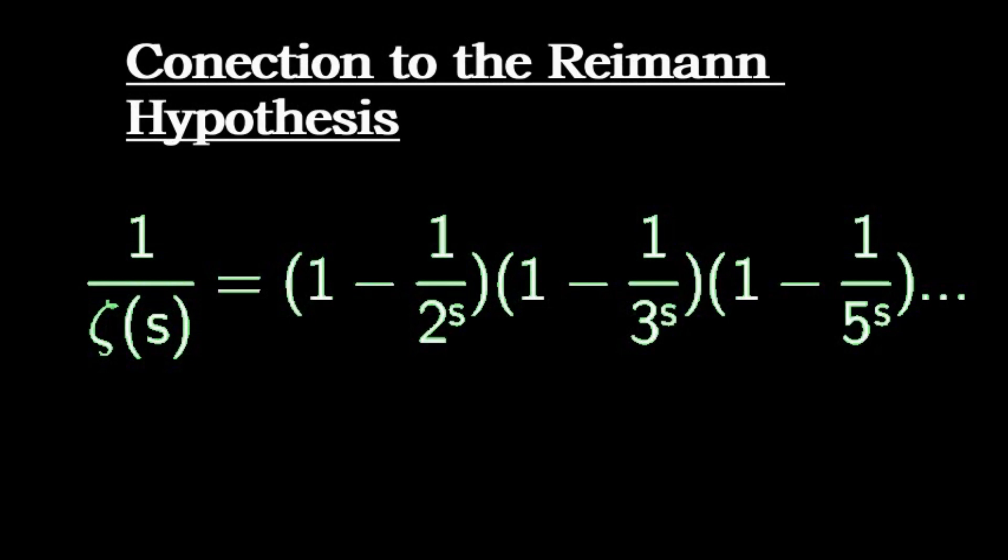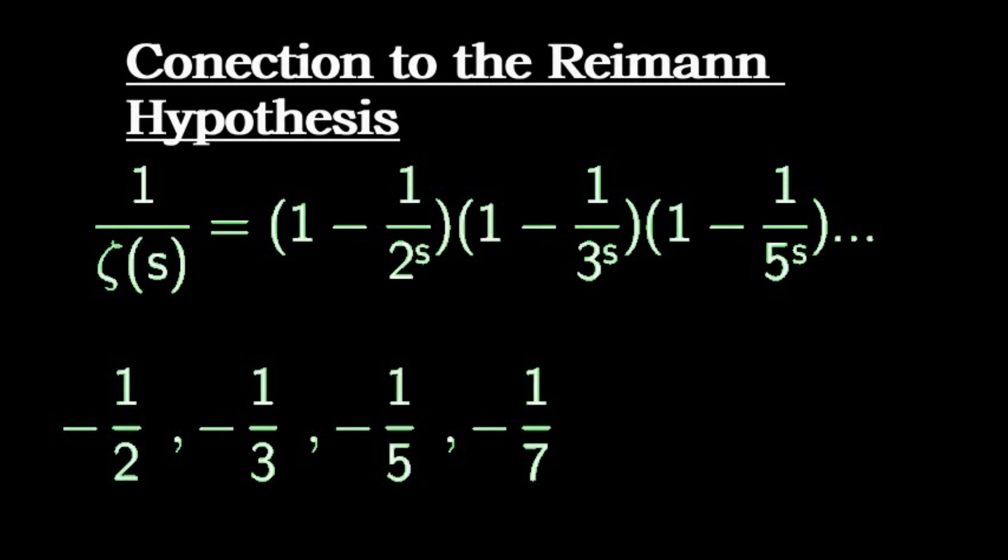But something even more interesting happens when we try to expand this product into a sum. Now this is an infinite product, so we can't expand it all at once. However, we know that each term must be a combination of the factors. Each factor is a reciprocal of a prime number. So each term is a product of these reciprocals. And so every term involves a product of primes.